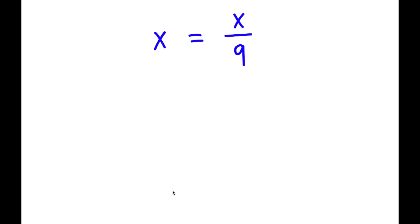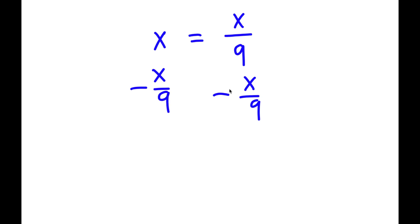So in this problem, I have x is equal to x over 9. To solve this, I'm going to first start by subtracting x over 9 on both sides. These two cancel out, and now I have x minus x over 9 is equal to 0.